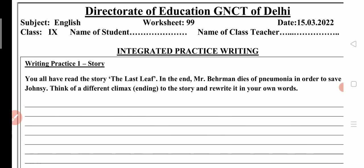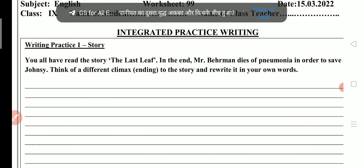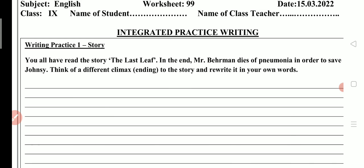My dear students, first of all we will read question number 1, which belongs to the story. You all have read the story 'The Last Leaf.' At the end, Mr. Berman dies of pneumonia in order to save Johnsy. Think of a different climax ending to the story and rewrite it in your own words. The end of the story was that Berman died from pneumonia, and Johnsy was saved.